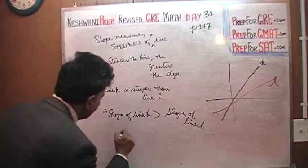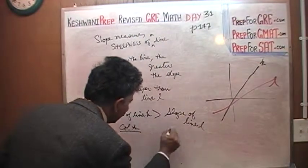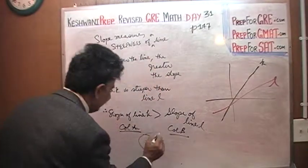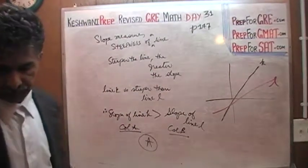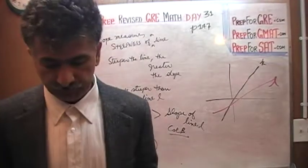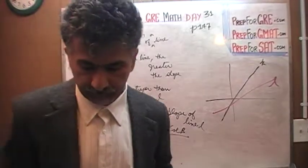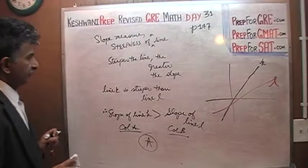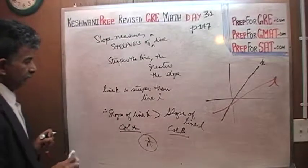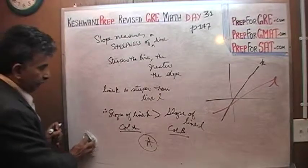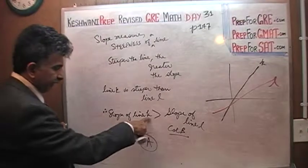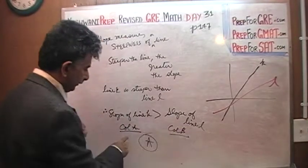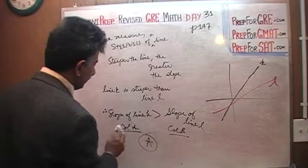This is your column A and this is your column B, therefore the answer is A. Because line K is a steeper line, it has a greater slope. Slope of line K is greater than slope of line L, therefore column A is greater than column B. Slope measures steepness of a line — the steeper the line, the greater the slope.